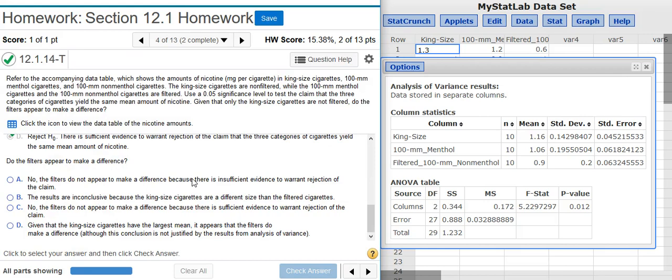And now the final part of the problem asks, do the filters appear to make a difference? Well, let's look at the mean values here from our column statistics. We see that the king size and the 100 millimeter menthol cigarettes are more or less in the same ballpark. There's a little bit of a separation there. The filtered non-menthol cigarettes, however, these are really different from the other two. So let's look at our answer options and see what we get. Do the filters appear to make a difference? Well, I would claim by looking at these mean values that they do make a difference.